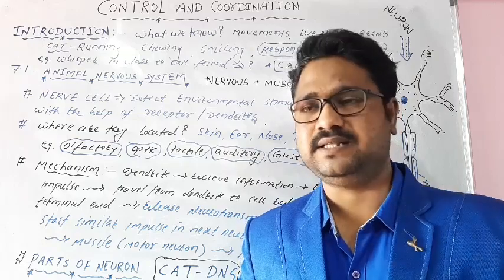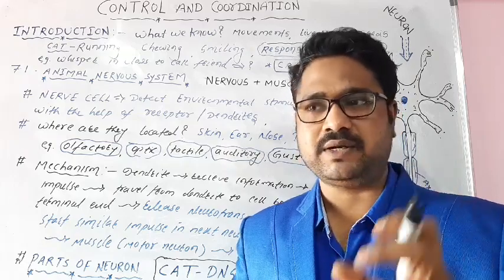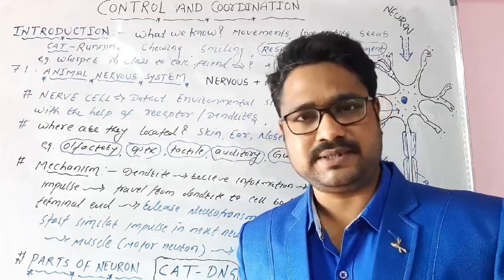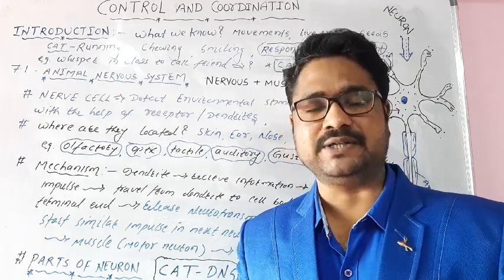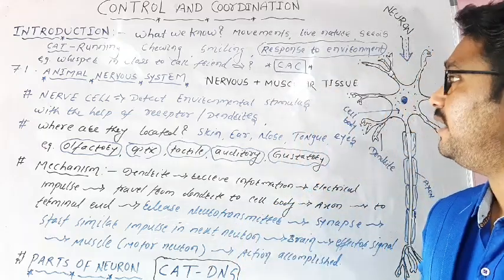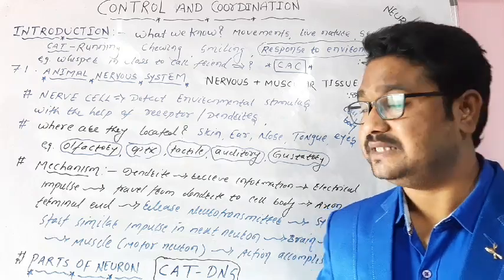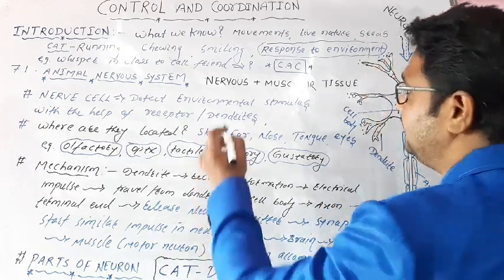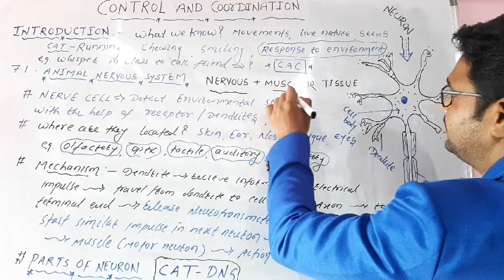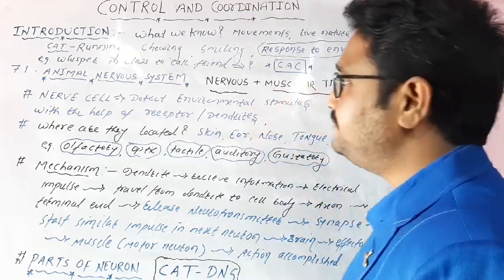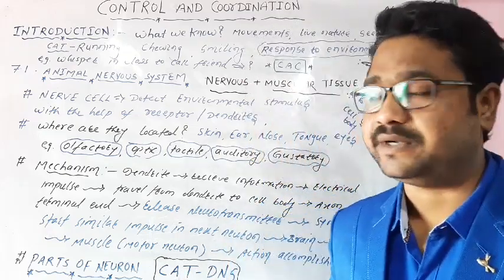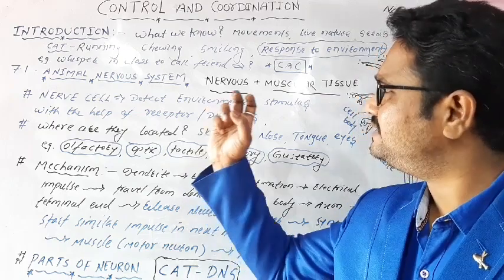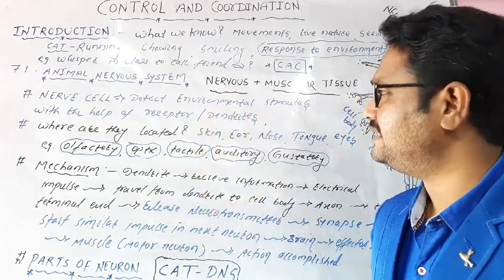This nervous system works in hand-in-hand coordination with the muscular system. It consists of nervous tissue and muscular tissue. What do these nerve cells or nerve tissue do? They detect environmental stimulus.